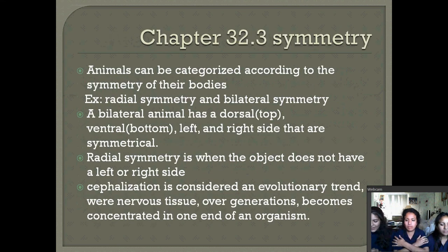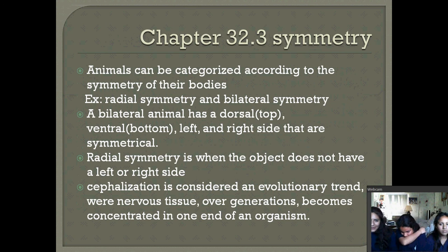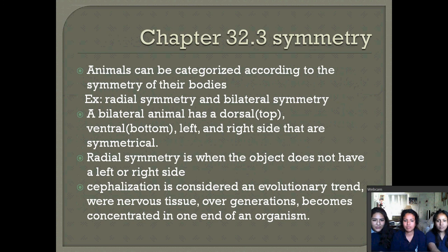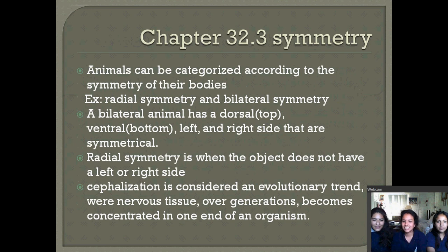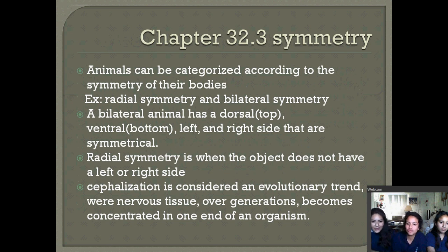Section 32.3 talks about how animals develop and how they're categorized. All animals are categorized according to the symmetry of their bodies. For example, there's radial symmetry and bilateral symmetry. A bilateral animal has a dorsal side (top), a ventral side (bottom), and left and right sides that are all symmetrical. In radial symmetry, the object doesn't have a distinct left or right side — every side is symmetrical to each other, like a circle. Cephalization is an evolutionary trend where nervous tissue, over generations, becomes concentrated at one end of an organism.